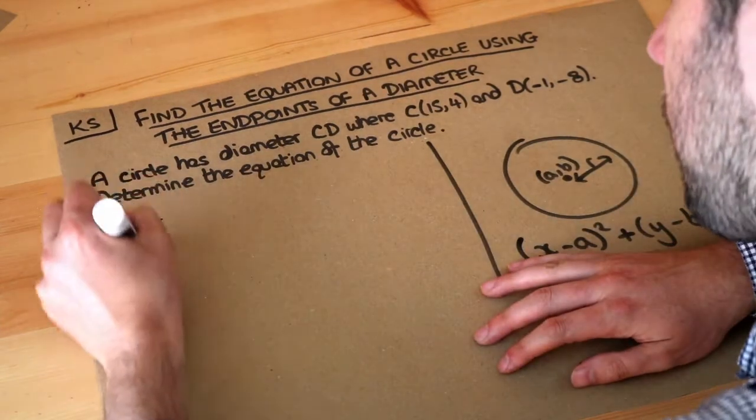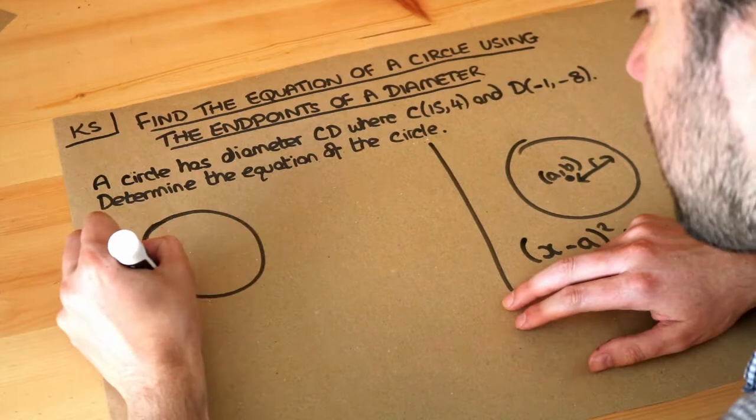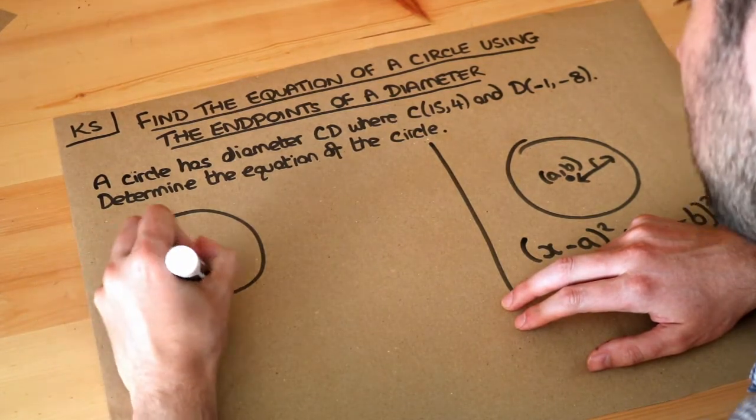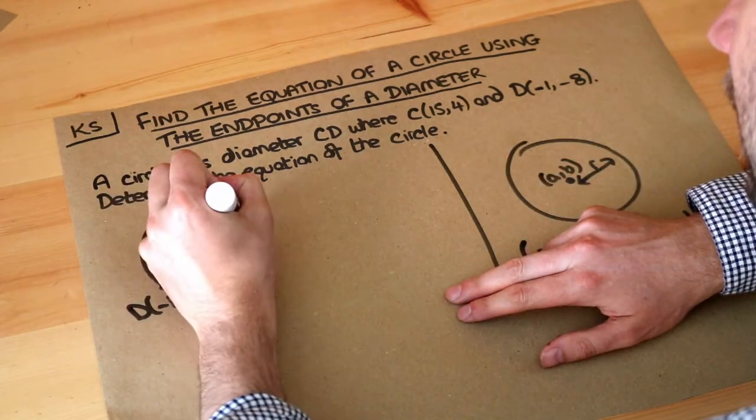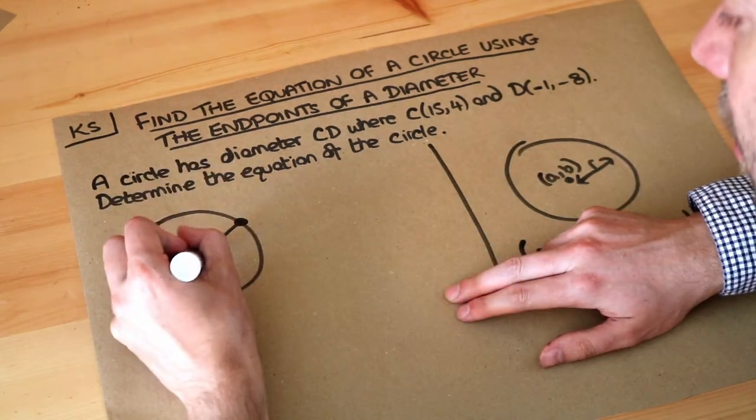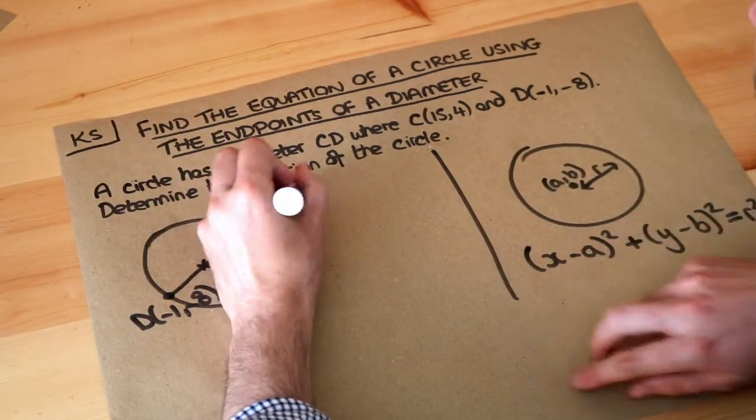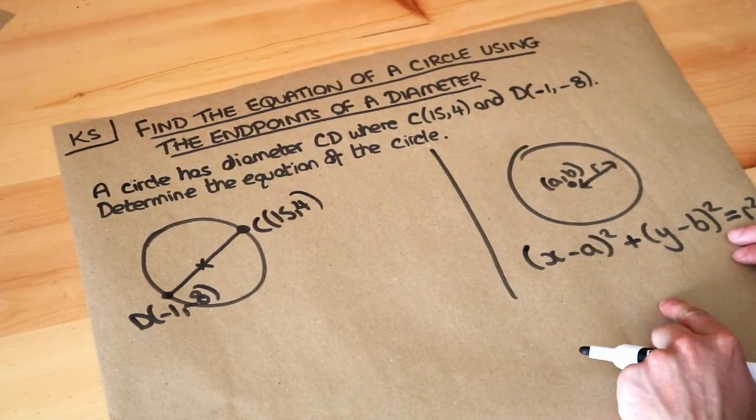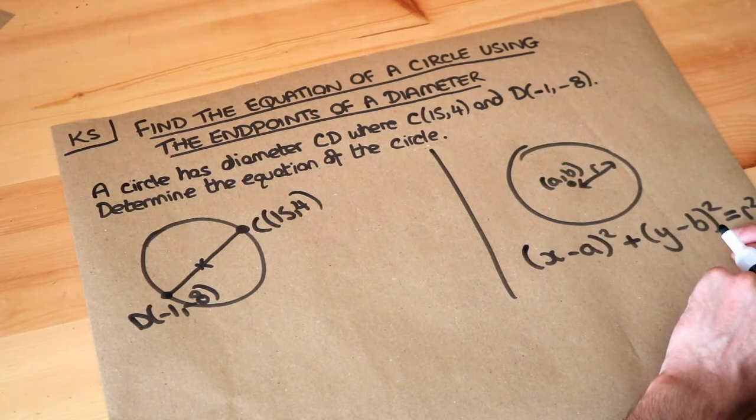Now let's draw this particular circle. We've got these two endpoints - the diagram is not going to be accurate - we've got D(-1,-8), and we've got a diameter CD, so C is the other end of the diameter. This goes through the center of the circle where C is (15,4), and we want to find the equation of the circle. Well we can see there's two things we need: the center of the circle and the radius of the circle.